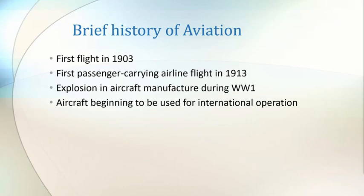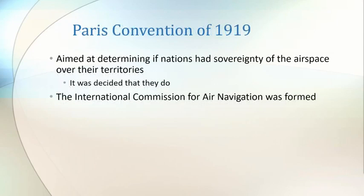There was growing international concern over air sovereignty — determining whether or not nations have sovereignty of the air over their territory. In an attempt to reach an international agreement on this matter, the Convention relating to the regulation of aerial navigation was arranged, which later became known as the Paris Convention of 1919. There were 26 nations that signed the treaty, including the British Empire, China, France, Japan, and Italy. The outcome was that each nation has absolute sovereignty over the airspace overlying its territories and waters. This Convention also saw the creation of the International Commission for Air Navigation.